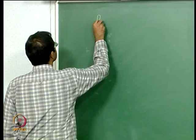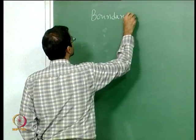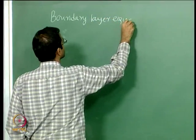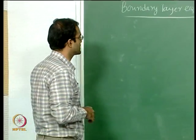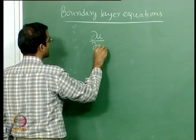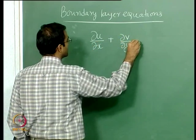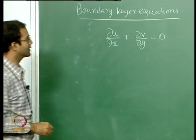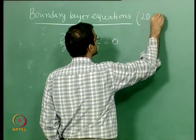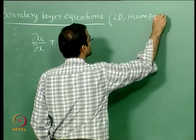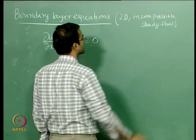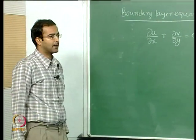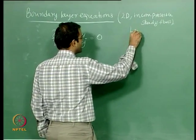Let us summarize the boundary layer equations derived in the last class. We write them in dimensional form, not non-dimensional form. The boundary layer equations here are for 2D incompressible steady-state flows. The continuity equation stays as it is.